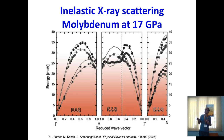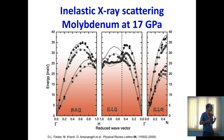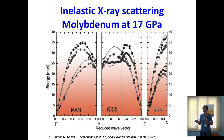X-ray inelastic scattering can use diamond anvil cells, allowing very high pressures — here 17 GPa, with one atom per unit cell. You can measure the phonon at every k-point: the dots are experimental data, compared with continuous and discontinuous lines from calculations. This represents a complete determination of the vibrational modes of the system.